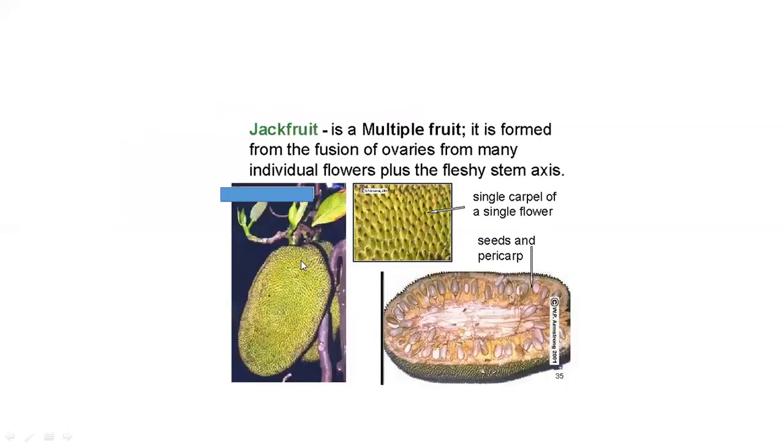This is jackfruit. These are the seeds, each developing from a single carpel in a single flower. One flower produces these seeds with their pericarps.